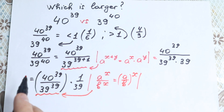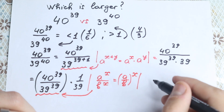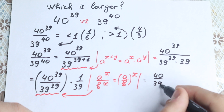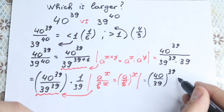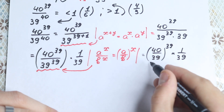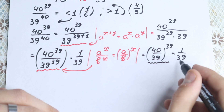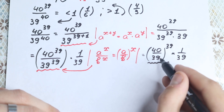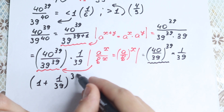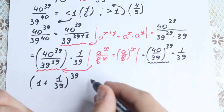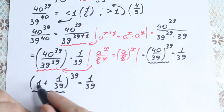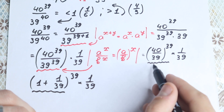Now let's work with the expression (40 over 39) to the power 39. We can rewrite 40 over 39 as 1 plus 1 over 39, because 39 over 39 plus 1 over 39 equals 40 over 39. So our expression becomes (1 plus 1 over 39) to the power 39, times 1 over 39.